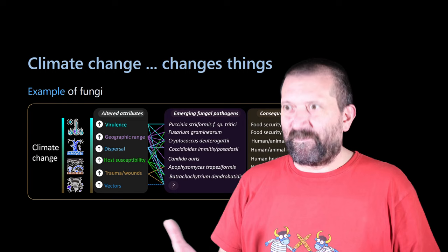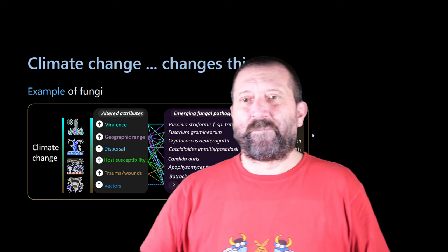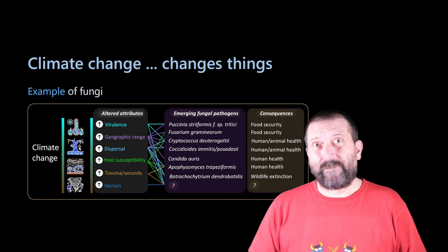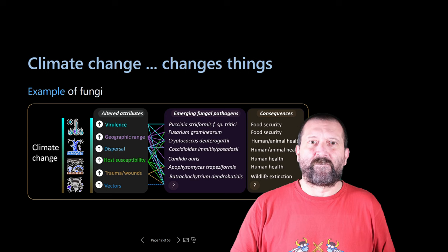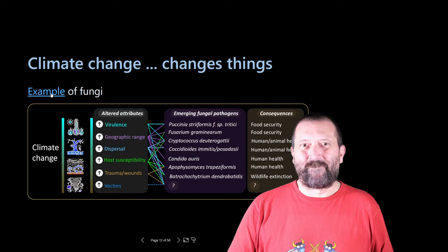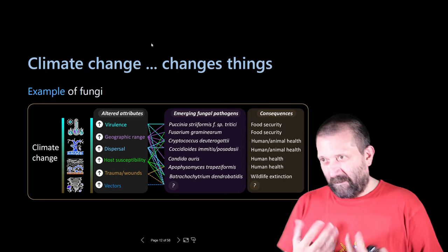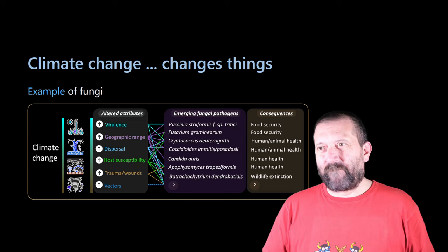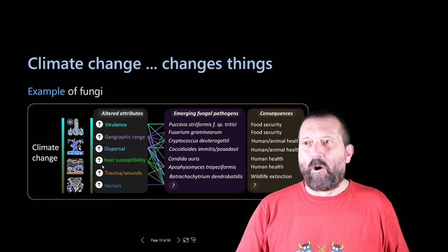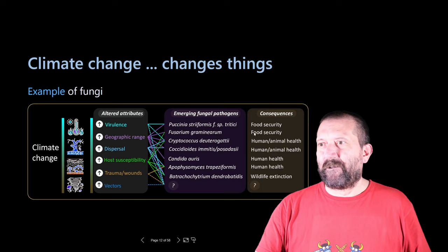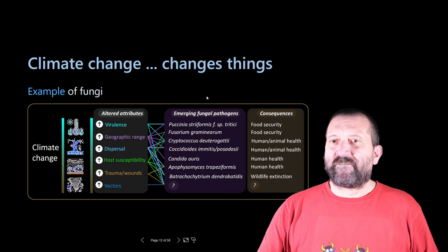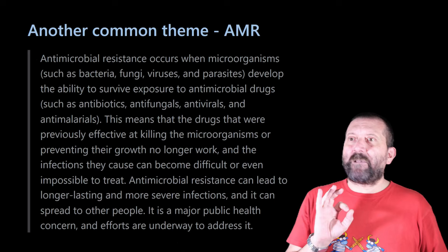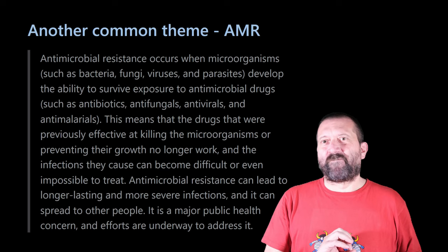One important characteristic of these pathogens is that because the environment plays a role, changes in the environment also play a role. For example, there is a paper about environmental transmission of fungi that highlights the role of climate change in changing the attributes of various fungi and the consequences of those changes on their propagation.